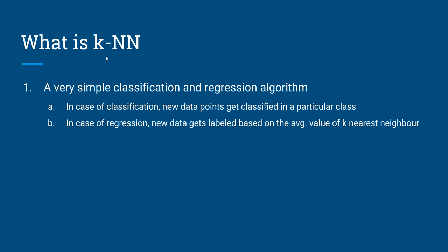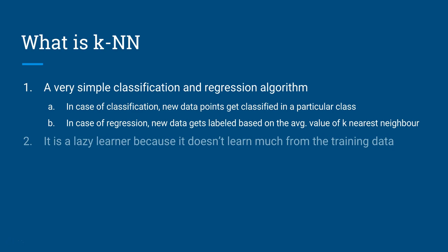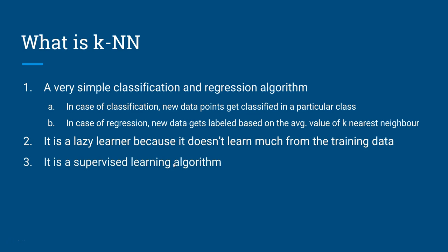KNN is a lazy learner because it doesn't learn much from the training data - most of the learning happens from live data, which is why it is called a lazy learner. It is also a supervised algorithm because we know in advance about the data, the target variable, and the experiment happens under supervision - meaning you are aware of what kind of data it is and what outcome you are looking for.